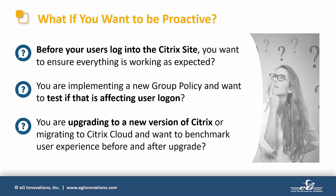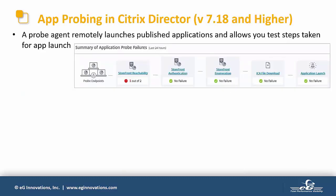While monitoring actual user sessions is important, there may be times where nobody is connected to your Citrix site and you still need to know if the site is up and whether it's responsive. You may also want to see instantly what effect tweaking your group policies has on user logons, or benchmark performance before and after a move to Citrix Cloud. To support these requirements, Citrix introduced App Probing as a feature in Virtual Apps and Desktops 7.18.